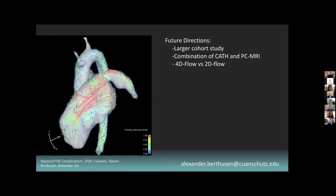Lastly, future directions, I'd like this to be a larger cohort study. We're planning on getting this published and to combine, maybe look at a combination of cath and PCMRI to see how that data results. And lastly, this is 4D flow versus 2D flow and what kind of results that might end in. Thank you. Any questions?